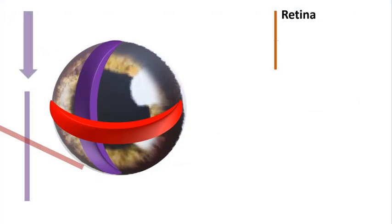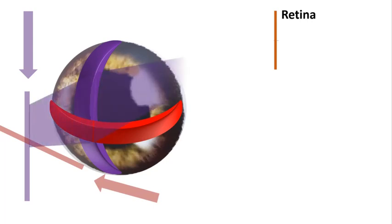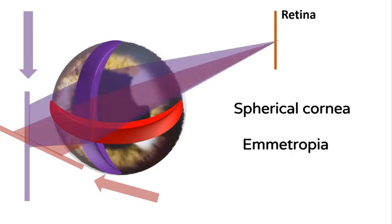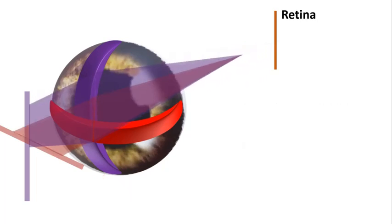The purple line represents the vertical meridian of the cornea and the pink line the horizontal meridian. Rays from both vertical and horizontal meridians come to a focus on the retina. So this is a spherical cornea and the eye is emmetropic — that is, there is no refractive error.